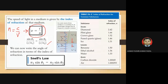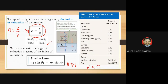The index of refraction must be greater than or equal to one, because the speed of light in a medium is always less than c. The index of refraction n equals one for vacuum.